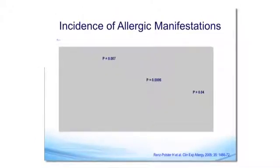The differences that we are now identifying have been replicated in at least four good retrospective studies. The incidence of atopic disease in vaginally born babies tends to be significantly lower than in babies born by C-section, independent almost of geography.